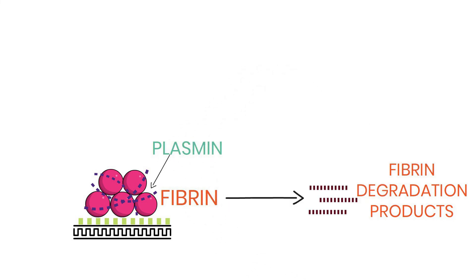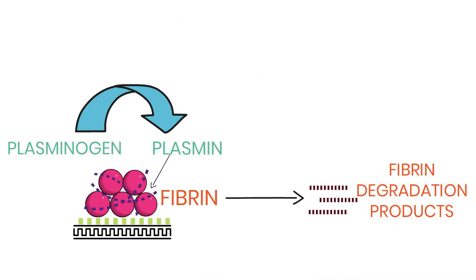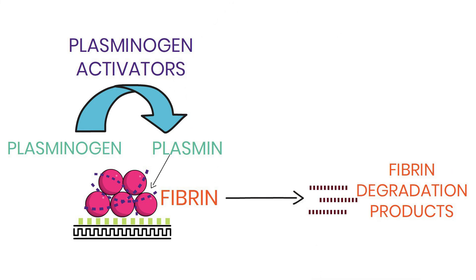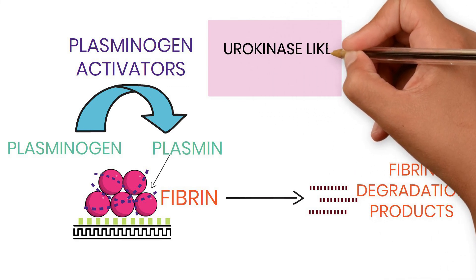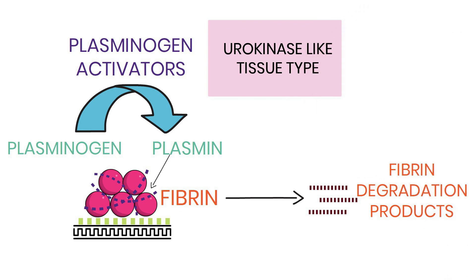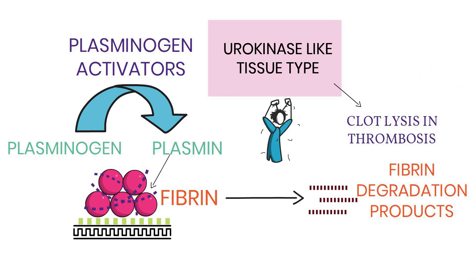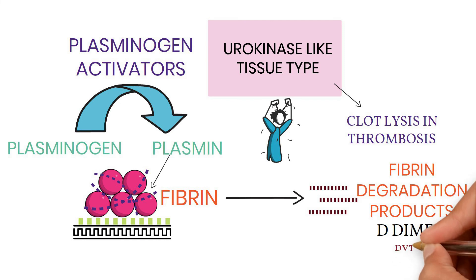Plasmin is derived from plasminogen with the help of plasminogen activators. The two important plasminogen activators in the body are urokinase-type plasminogen activator and tissue-type plasminogen activator. Since these cause clot lysis, they are used clinically to lyse clots in cases of thrombosis. D-dimers, one of the fibrin degradation products, are elevated in abnormal thrombotic conditions such as DVT, pulmonary embolism, or DIC.